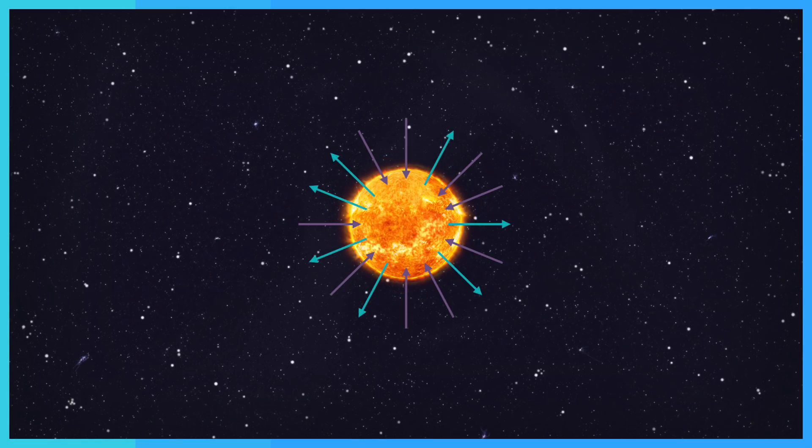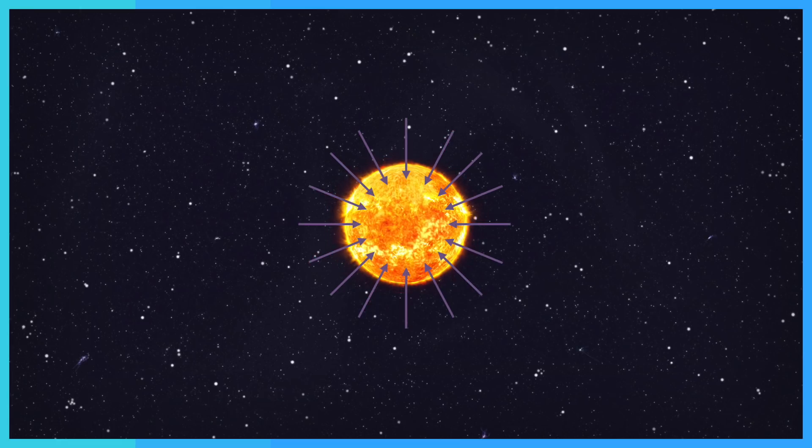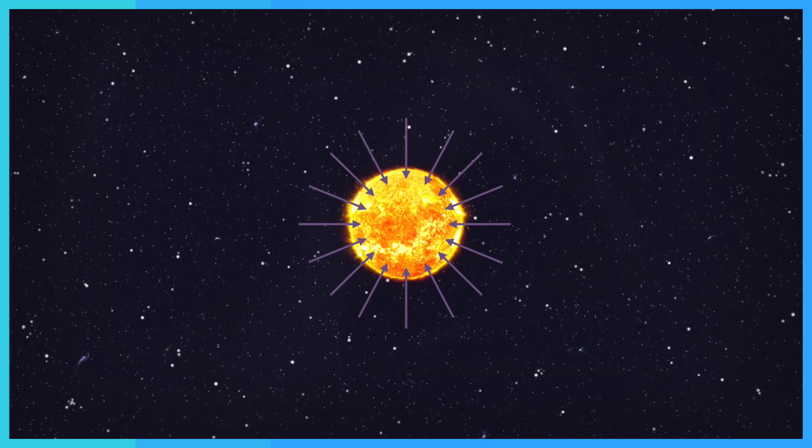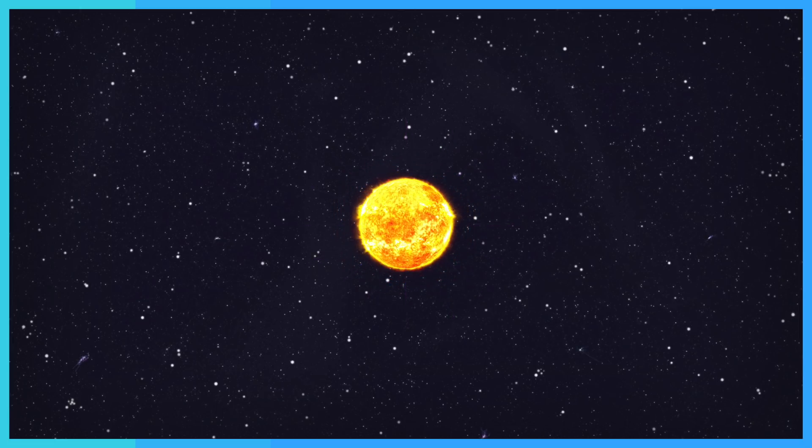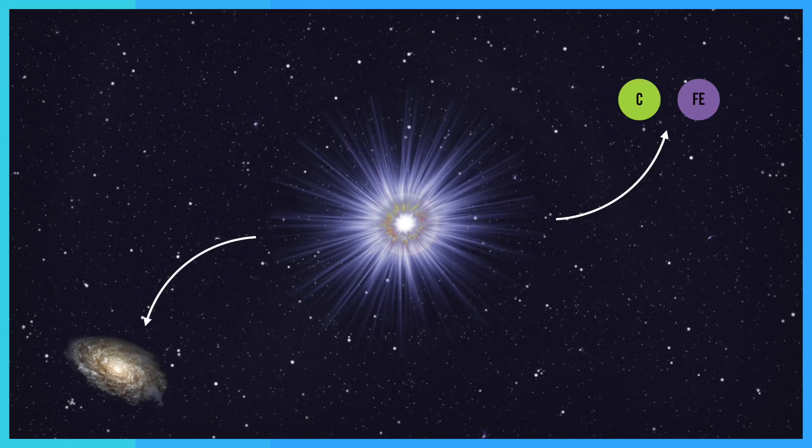The star then starts expanding again, but again the nuclear fusion runs out. This continues until the star cannot make any more energy and then can make its final collapse. The collapse is so fast and very violent. This makes a massive shockwave when it happens and causes the rest of the star to explode outward. As the gravity pushes the star inward, the pressure of the center of the star reaches such an extreme level that the heavier molecules like iron and carbon start to interact, releasing more energy. It can outshine an entire galaxy.